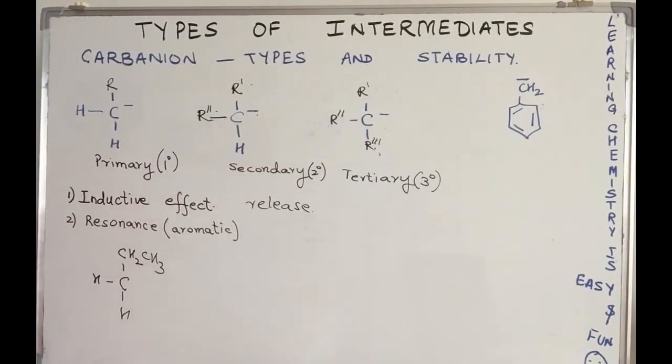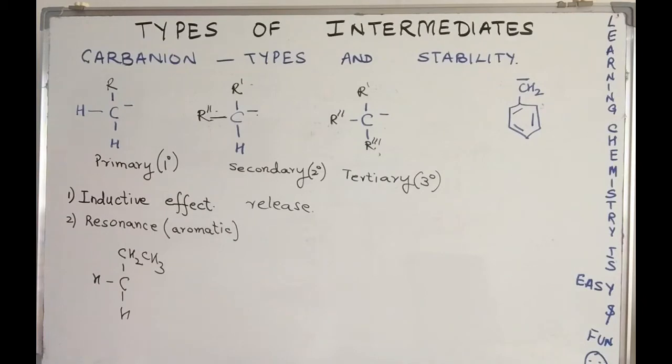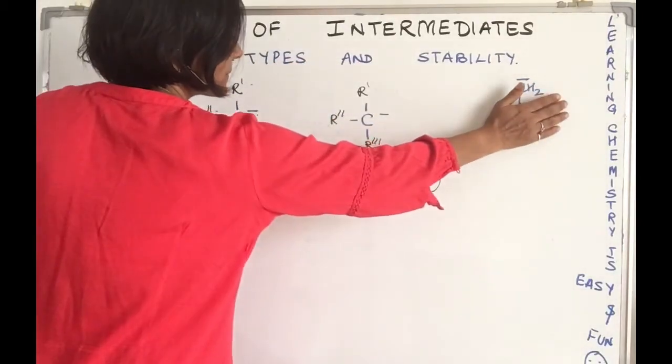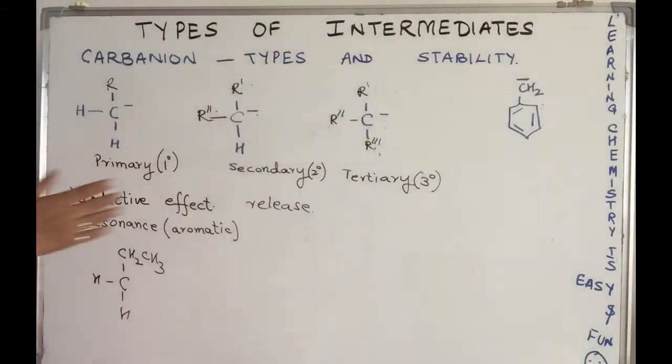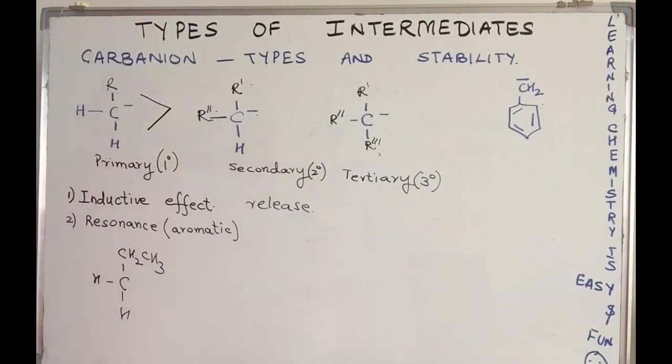Out of the three, which one do you think is the most stable? Write the answer in your notebook. List primary, secondary, and tertiary in the order of stability. Let's see if the answer matches. Be careful about the direction of the greater than sign. Which is most stable? We are not bothered about this at present—don't worry, I will talk about it. Primary, secondary, and tertiary. Written. Are you ready?